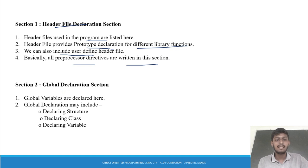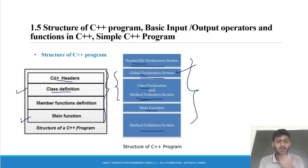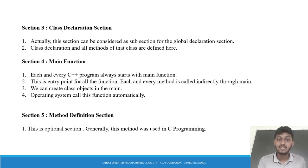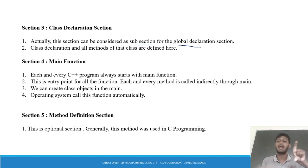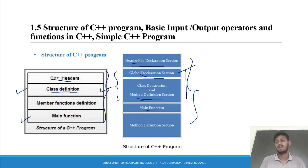Then the global declaration section — whatever we need to access throughout the entire program, we write in the global declaration section. In the global declaration section we can write global variables, define structures, define classes, define variables. Actually, this class section can be considered as a subsection of the global declaration section. In this diagram they were shown as separate blocks, but in the main structure they are merged and called class definition.